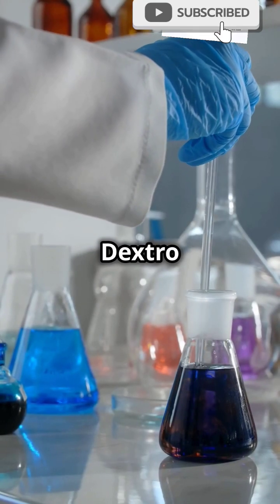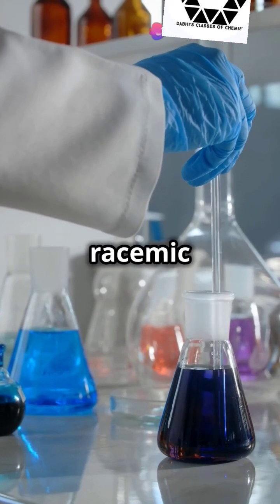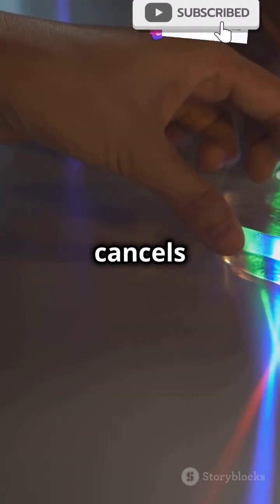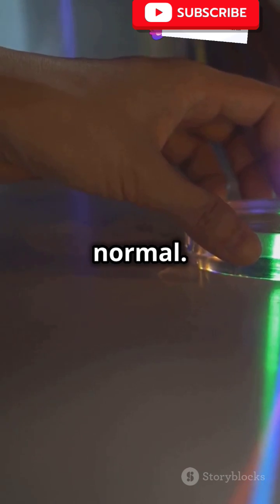If you mix equal amounts of dextro and levo forms, you get a racemic mixture. This mix cancels out the rotation, leaving the light untwisted and normal.